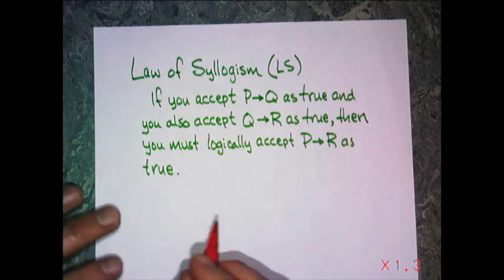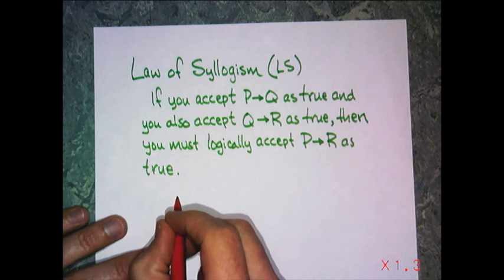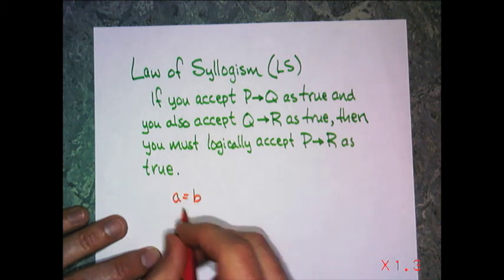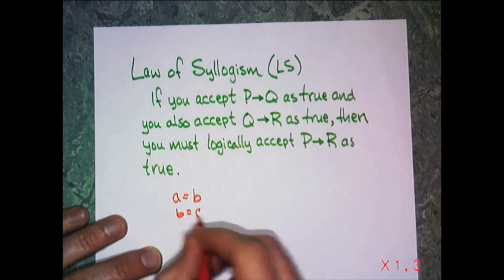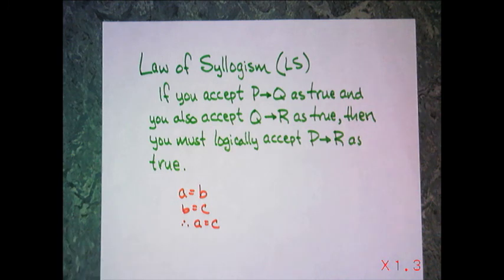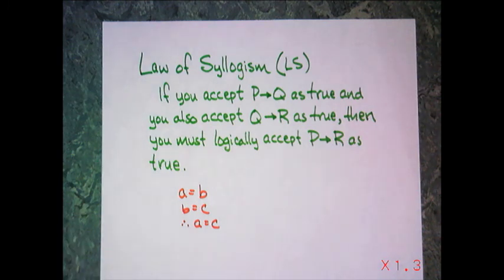And in mathematics we often see this in the form of equality. If A is equal to B and B is equal to C, then therefore A must be equal to C. That's a transitive property of equality. So it works very similarly. So there's the law of syllogism.